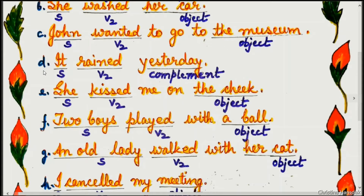Example D: It rained yesterday. 'It' is the subject, 'rained' is V2, and 'yesterday' is the complement.